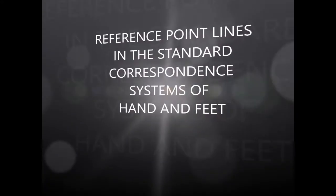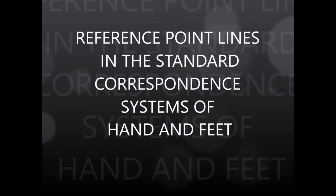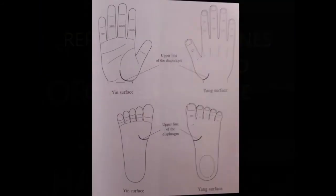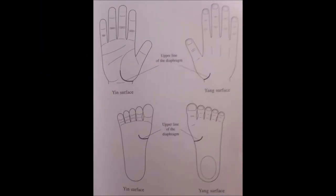Reference point lines in the standard correspondence systems of hands and feet. The diaphragm divides the trunk into the chest and the abdominal cavity.